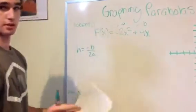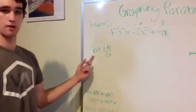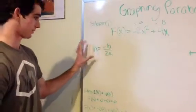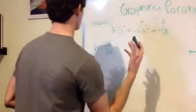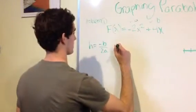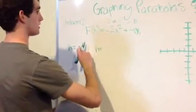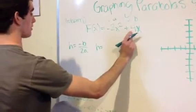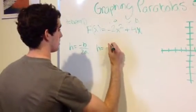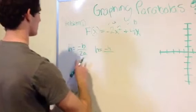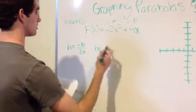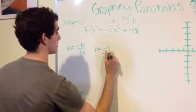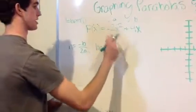Using these two values, we're going to plug them into our formula right here. We have h equals negative b, so negative 4, over 2 times our a value, which is negative 2.